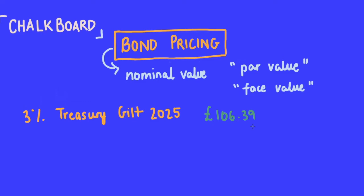The simple way to calculate the value of a holding is by converting this into a price per one pound of nominal stock. So for every one pound of nominal stock, the current value would be one pound and six pence.